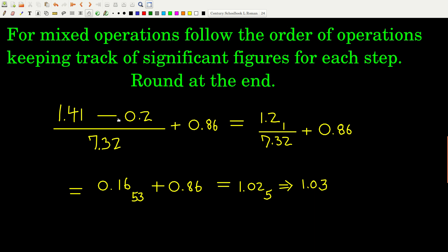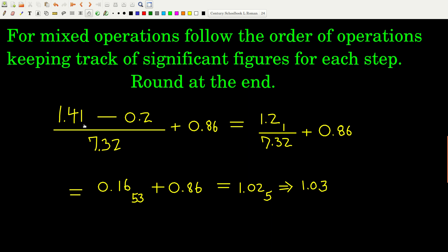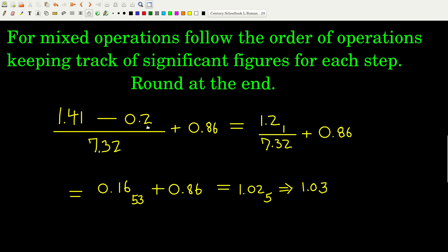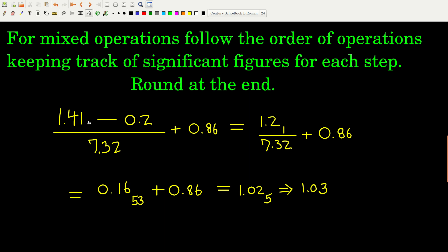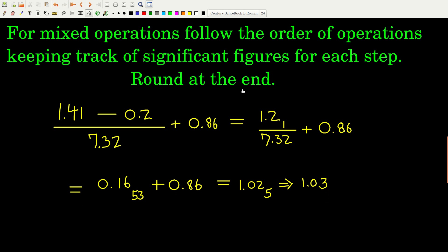So because we're doing the subtraction, remember the rule there is that we would round to the same place as the number that has the last significant figure farthest to the left. Well, 1.41, the 1 is the last significant figure, and it's 2 to the right of the decimal. The 0.2, the last significant figure is the 2. It's 1 to the right of the decimal. That's farther to the left than this is, so we're going to round at this step to the tenths place. So there it is. We're just doing the first step, and we get 1.2 sub 1. Okay, we kept the tenths place, and we wrote the first insignificant figure as a subscript.